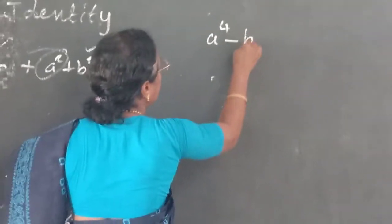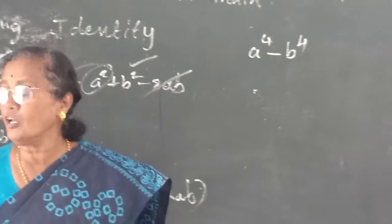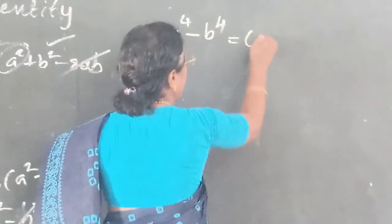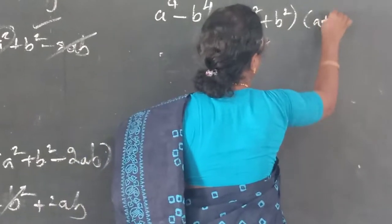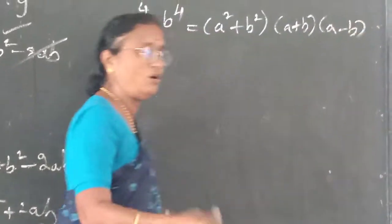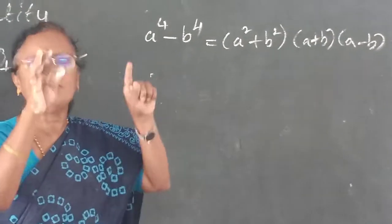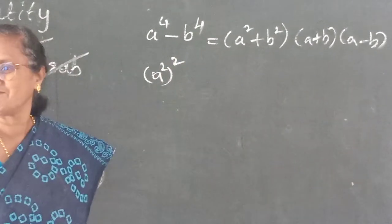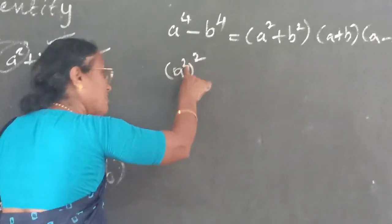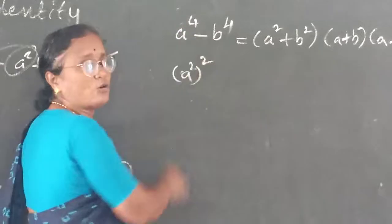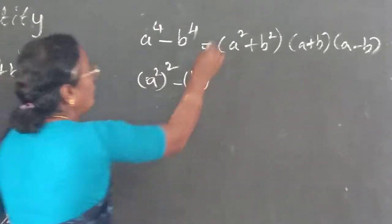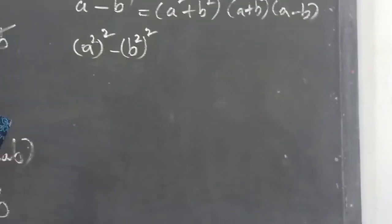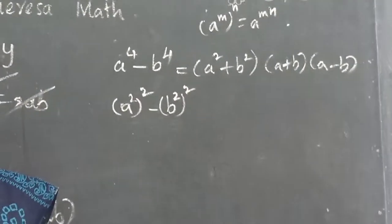Next one: a to the power of 4 minus b to the power of 4. Even if you don't know the answer directly, you can write a⁴ as (a²)², because 2 twos are 4. Similarly b⁴ as (b²)². So this is in the form x² minus y², where x = a² and y = b².